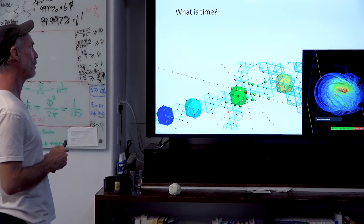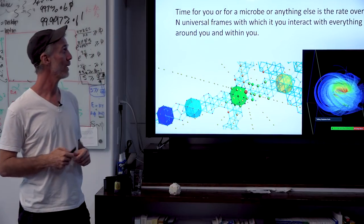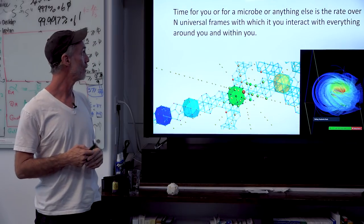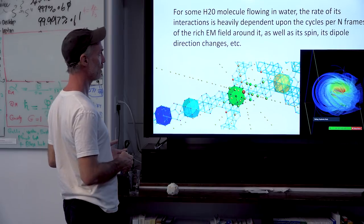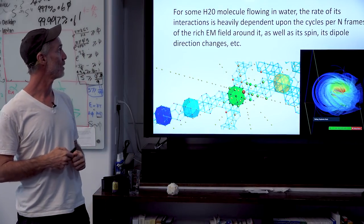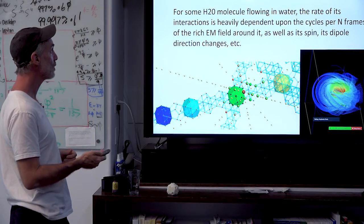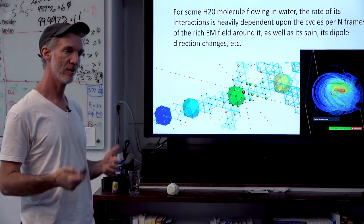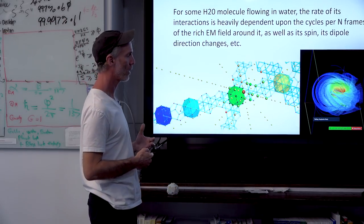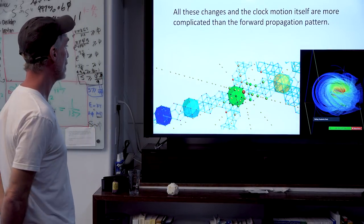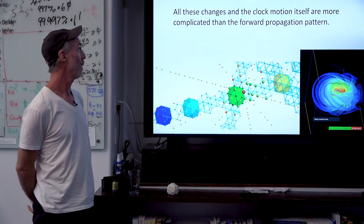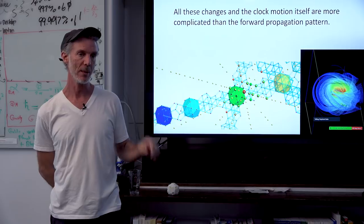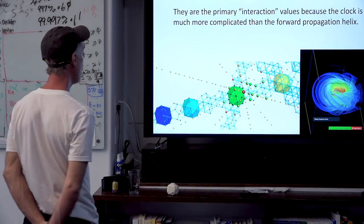To comment on that, we can ask: what is time? Time, for you or for a microbe or anything else, is the rate over some quantity of universal frames with which you interact with everything around you and within you. For some H2O molecule flowing in water, the rate of its interactions is heavily dependent upon the cycles per n frames of this rich electromagnetic field around it, as well as its spin, its dipole direction changes, etc. These are the aspects of the particle that cause interaction with other particles. All of these changes and the clock motion itself are more complicated than the forward propagation pattern because they relate more to a two-sphere, whereas the forward propagation relates to a one-sphere.